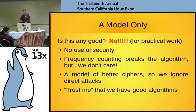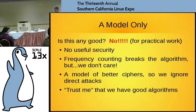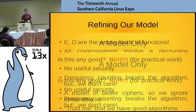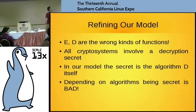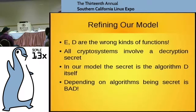Now, you might ask: is this any good? And the answer is heaven's no. There's no useful security in this algorithm, but that doesn't matter because we're actually using it as a model to stand in for algorithms that you can't attack so easily. One of the themes of this talk: every cryptosystem involves a decryption secret. Knowing that secret is what makes it easy, rather than hard, to decrypt a ciphertext. But the only room in that model was for the secret to be the algorithm D itself — and one of the lessons of history is that that is an exceptionally bad idea.